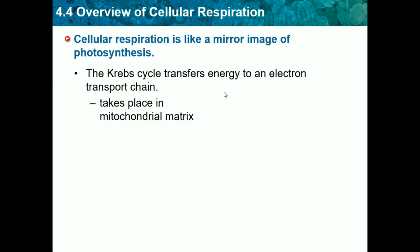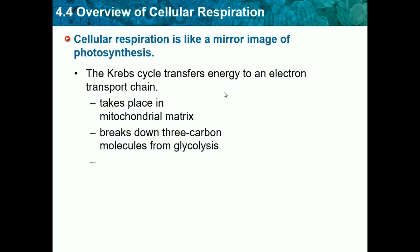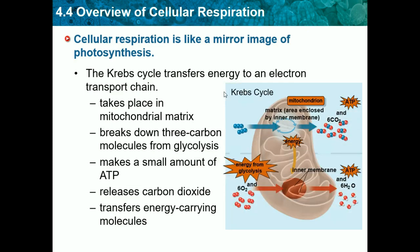The Krebs cycle takes place in the mitochondrial matrix, which is the area enclosed by the inner membrane. It breaks down the 3-carbon molecules produced from glycolysis, makes a small amount of ATP, and releases carbon dioxide as a waste product.